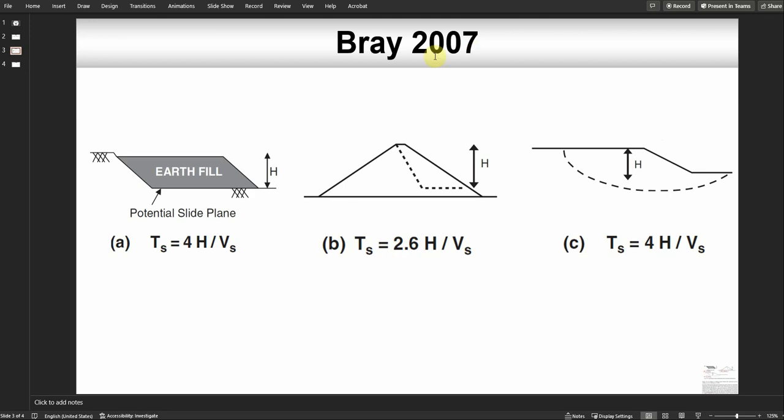For the Bray 2007 publication, he provided three different ways based on the slide slip surface. In the first case, which is A, the fundamental frequency is equal to 4h divided by vs. H is the height of the mass that is sliding along the slip surface, and vs is the shear wave velocity.